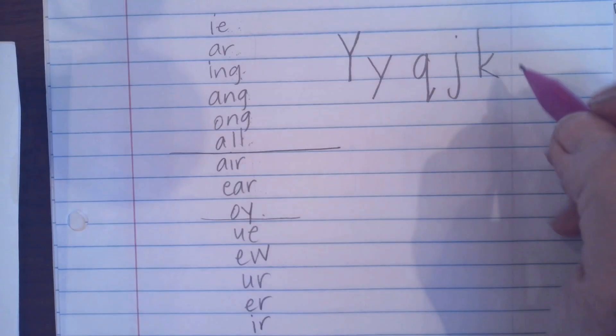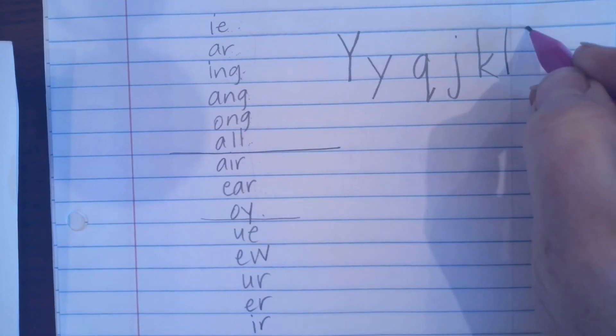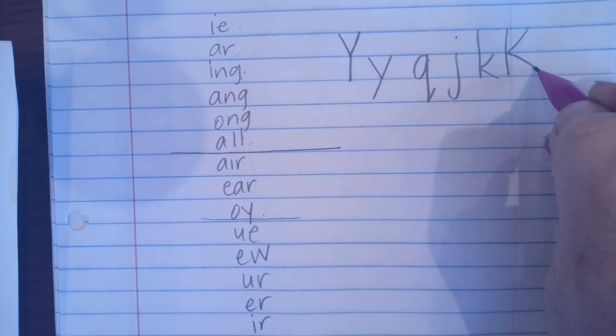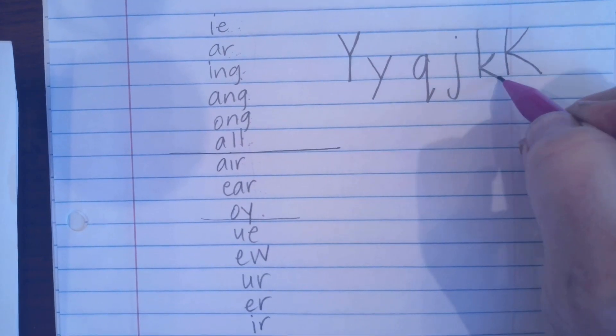Okay. Oh, it's already there. So there's the K. And then uppercase K uses the whole line. It looks the same. This uses half the line. This uses the whole line.